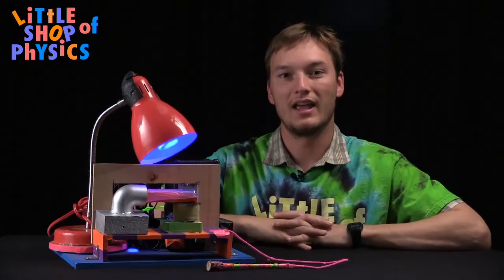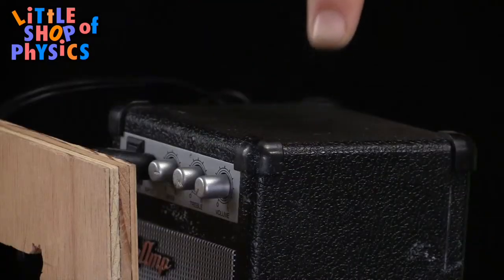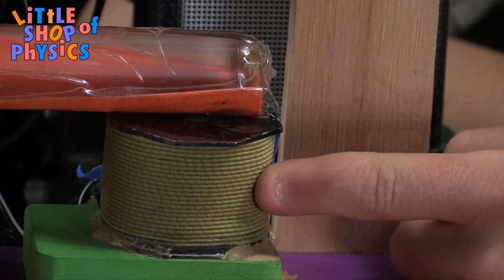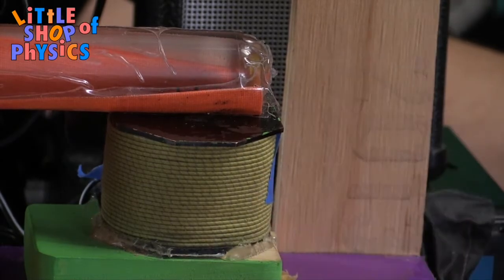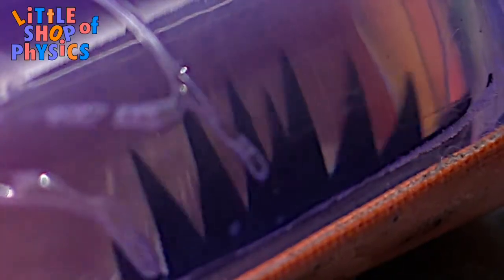Funky Ferro Fluid takes music as an input and splits that input into a speaker and a solenoid. The solenoid then puts out a magnetic field which allows this black fluid, which is a solution of iron filings and oil, to dance with the music.